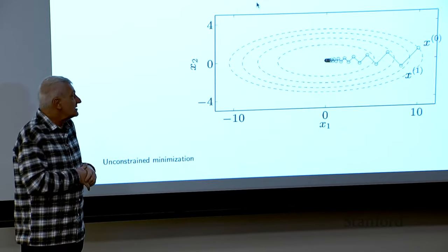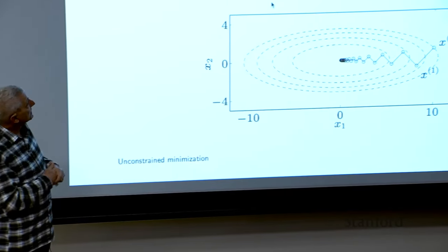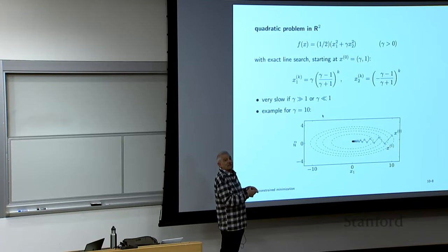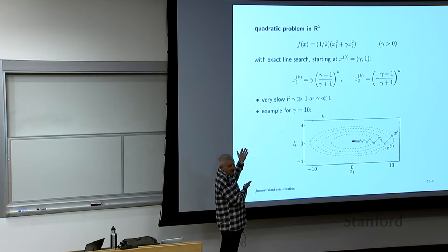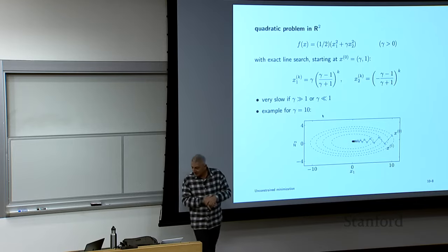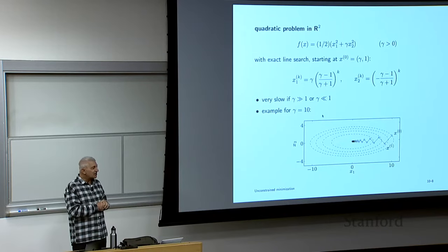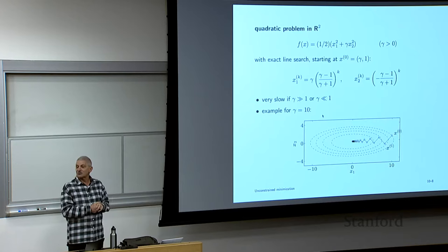The flip side of this is: how well does gradient descent do when the sublevel sets are actually literally spherical — Euclidean balls? In that case, the answer is just one step. The takeaway message is that the efficiency or speed of gradient descent depends on how aspherical or anisotropic the sublevel sets are.